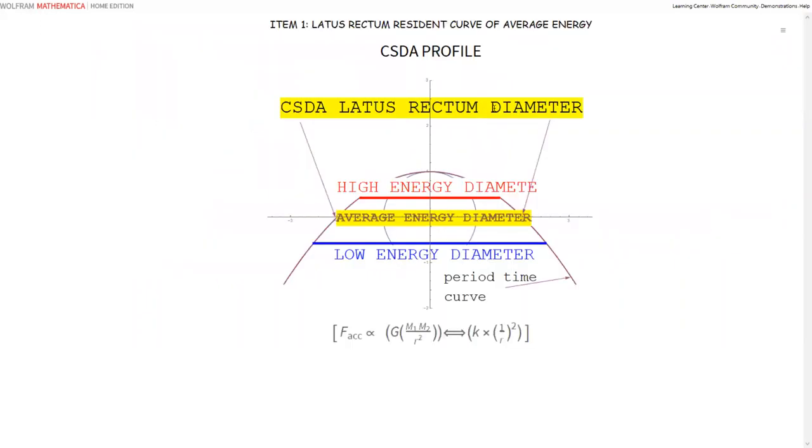Now, the lattice rectum and Sir Isaac Newton's universal law. All orbit curves, this is a profile of a CSDA, are relative with the energy on the system lattice rectum diameter. This high energy curve and low energy curve and the lattice rectum diameter is the average energy of the orbit itself. I'm going to change Sir Isaac Newton's universal law just a little bit. M1 and M2 will never change in our lifetime and roll them in with the constant of proportionality G. We now have K times 1 over R squared, which is the constant of proportionality times the curvature squared. The unit circle, I like to use it because that's a population of curvature.